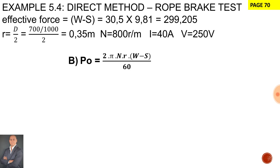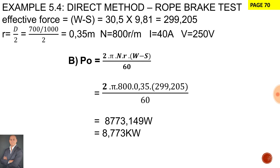Now in part B to calculate the braking output power and this formula is the top part of our efficiency formula. Now to calculate the output power is 2 times pi multiplied by the speed, the radius and the effective force all divided by 60. So let's substitute those values in. Our 2 is our constant multiplied by pi multiplied by the speed of 800 revs per minute, the radius of 0,35 meters and the effective force of 299,205 newtons divided by 60. And if we simplify that the output power is 8,773 kilowatts.